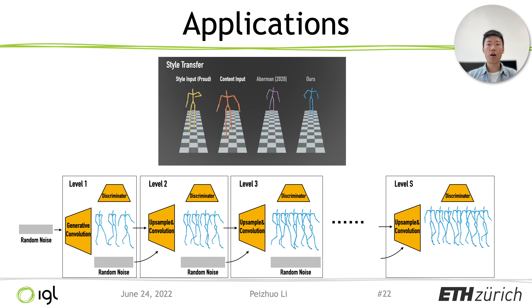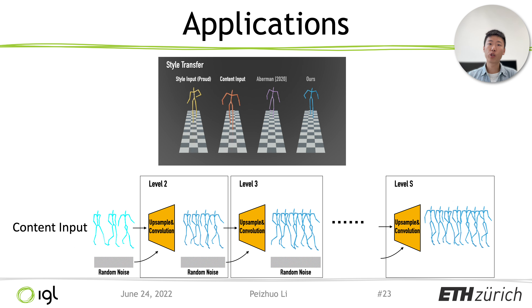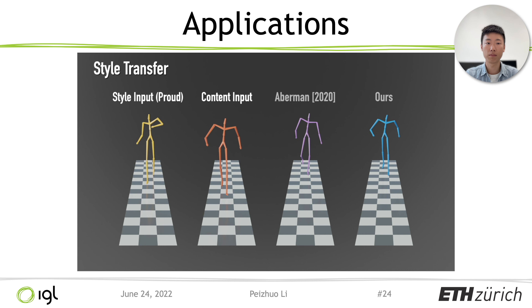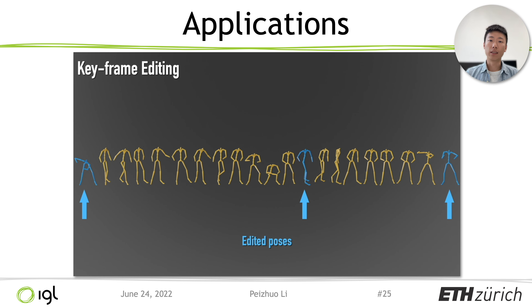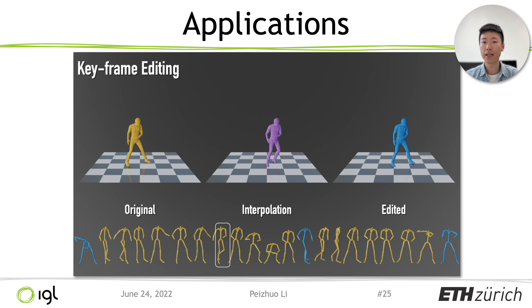There are many interesting applications with our framework. One example is style transfer: we train our network with a style input — a proud walk in the example video — and by conditioning the coarse level with a content input sequence, the output maintains the coarse content while applying high-frequency style embedded in the network, resulting in motion-style transfer with quality comparable to state-of-the-art results trained on large datasets. A similar technique is used in keyframe editing: by editing keyframes at the coarse level and passing them to the network, we obtain a seamless and natural sequence without the interpolation artifacts.